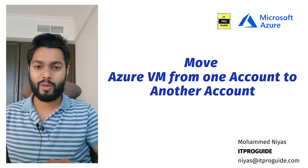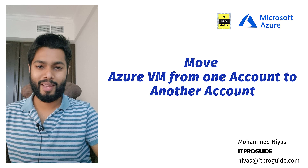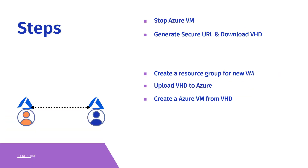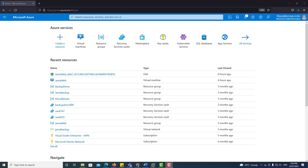Let's see how to do that. Here are the steps we are going to execute. First, stop the Azure virtual machine that you want to move. Then generate a secure URL and download the virtual hard disk. Next, log in to the other user account, create a resource group in that account, upload the VHD we downloaded, and finally create a virtual machine with the existing VHD. I'll be demonstrating with the graphical interface, not the command line, so it will be easy to follow.